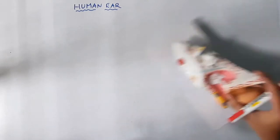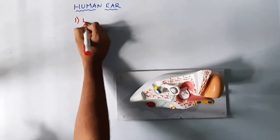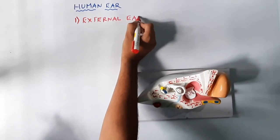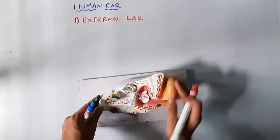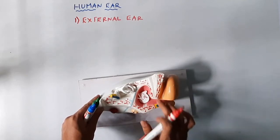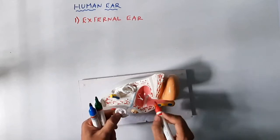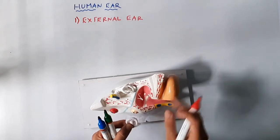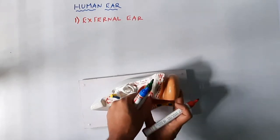The ear can be divided into three important parts. The first part is the external ear, also called the outer ear. This includes the pinna, a small canal called the external auditory meatus — which produces ear wax — tiny hairs, and the tympanic membrane, also known as the eardrum. These three components make up the external ear.